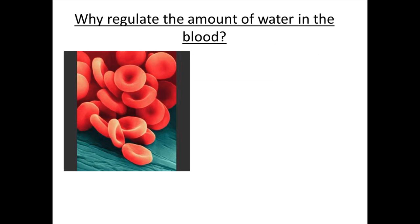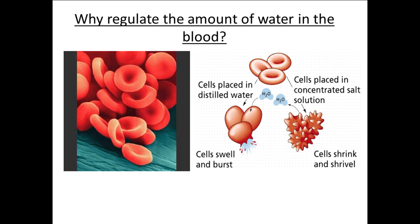But why is osmoregulation so important? If you take our blood cells for example — if we drink too much water, our blood plasma becomes less concentrated, and our cells might take on water and cause them to burst. If we drink too little water, then our blood plasma might become more concentrated, and our red blood cells lose water, which causes them to shrink and shrivel.